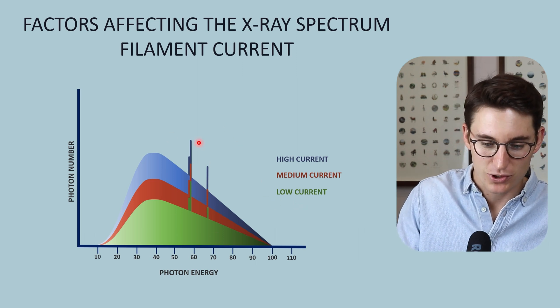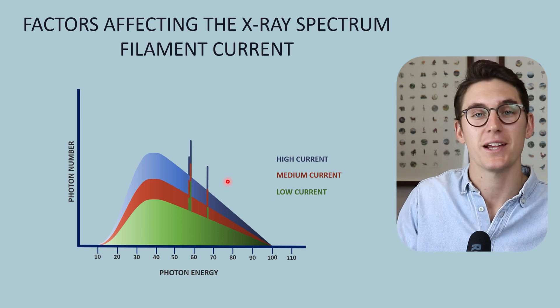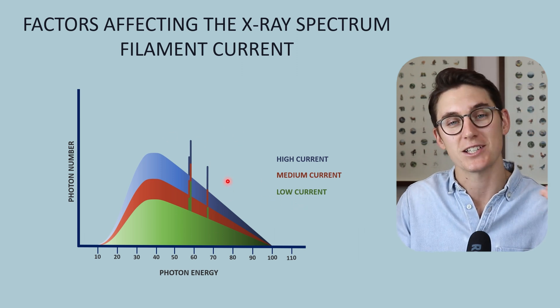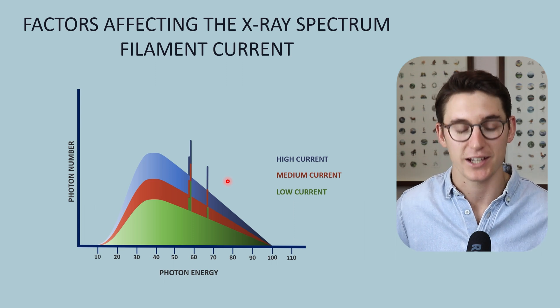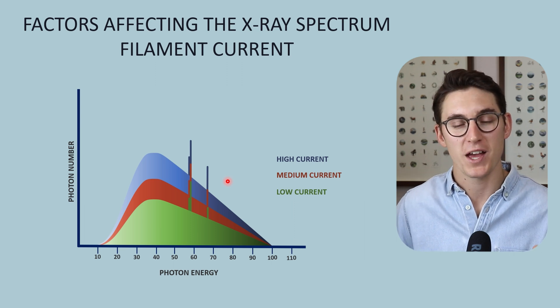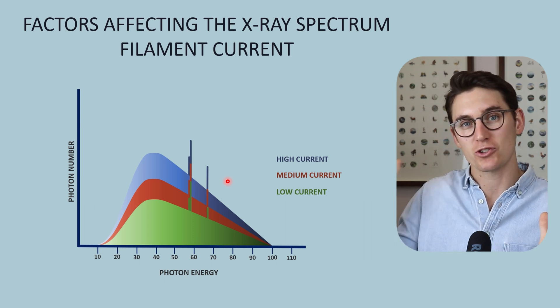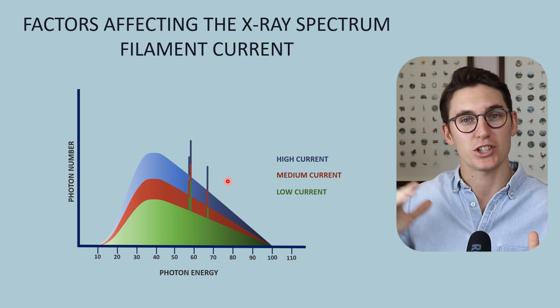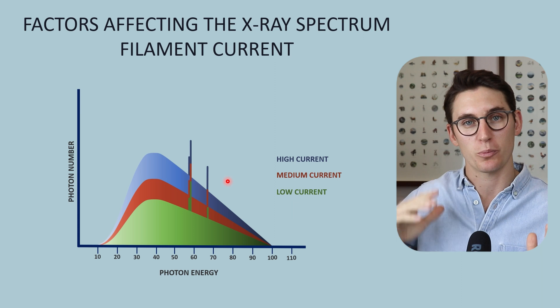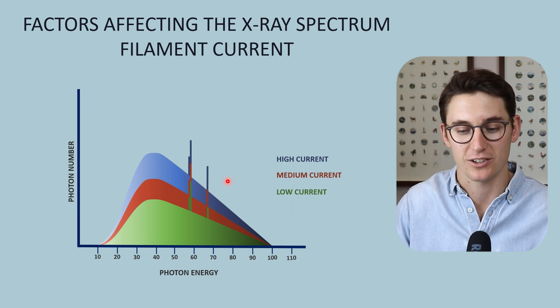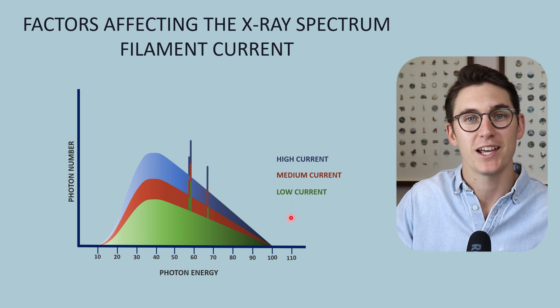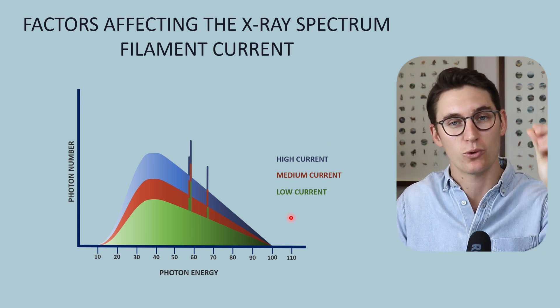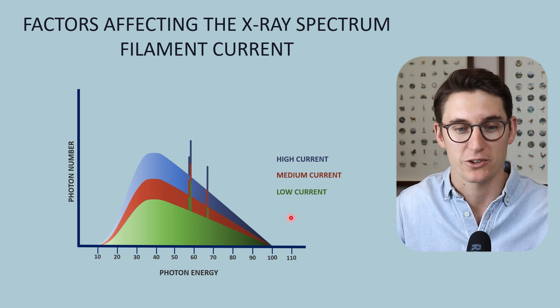Our characteristic x-rays remain the same. It's still the same target — if it was tungsten, like in this example, our L-shell dropping to our K-shell or M-shell dropping to our K-shell is independent of the current. It's specific for our target material.